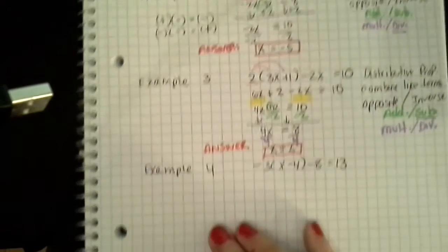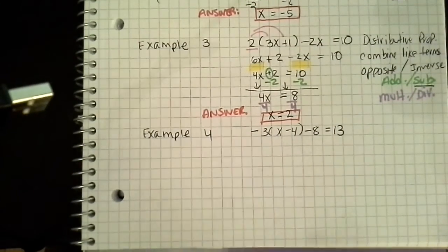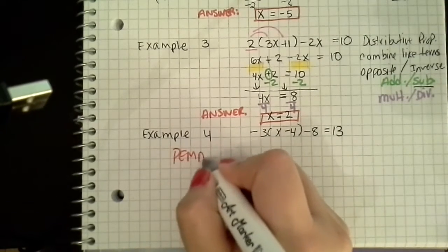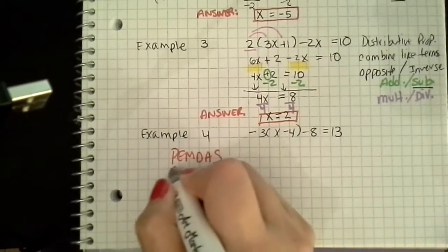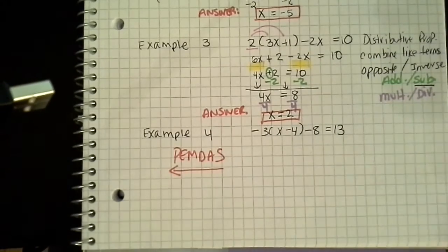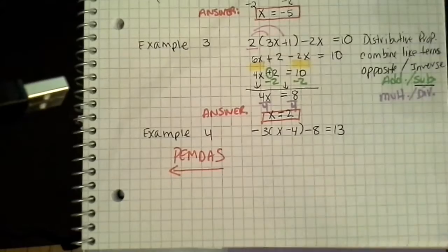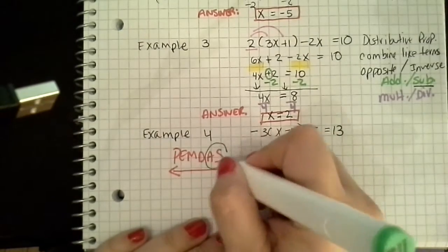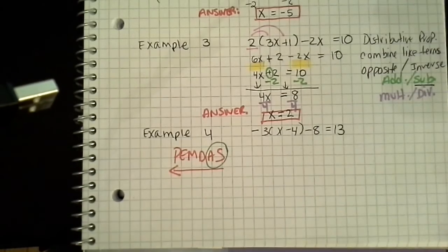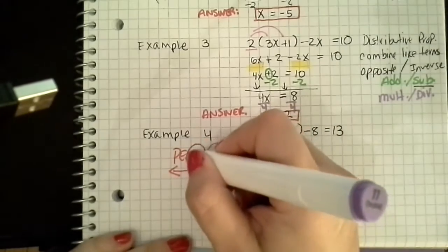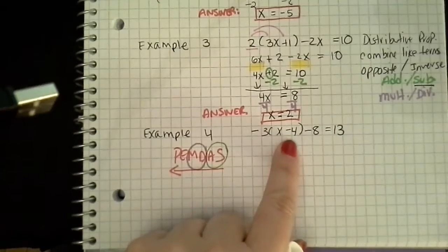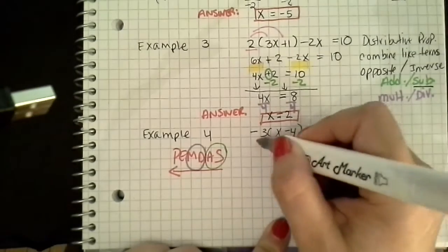And our last example. Remember, we're using PEMDAS backwards. And I start with my addition and subtraction, then I move on to my multiplication and division. So whenever we have parentheses, we're going to use the distributive property. So this is my multiplier. I'm going to bring that in. I'm going to write down what I'm using — the distributive property.